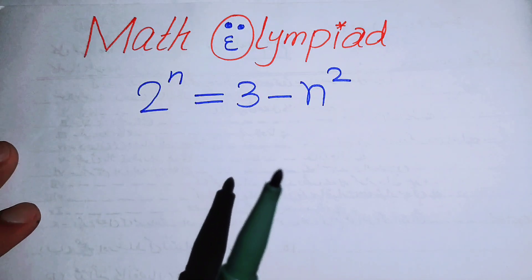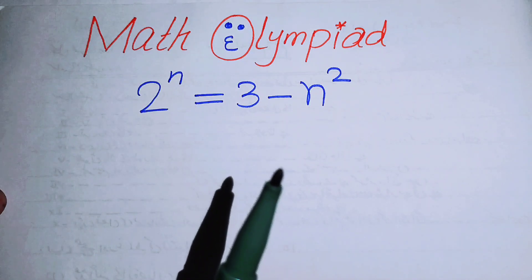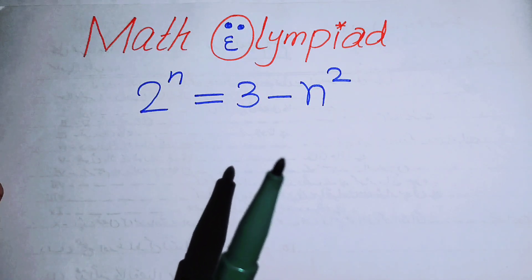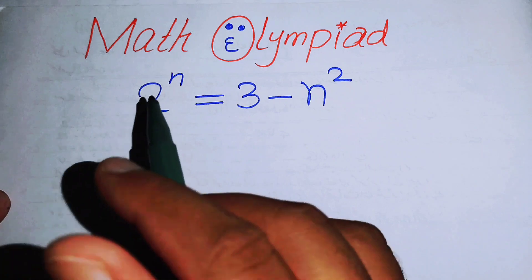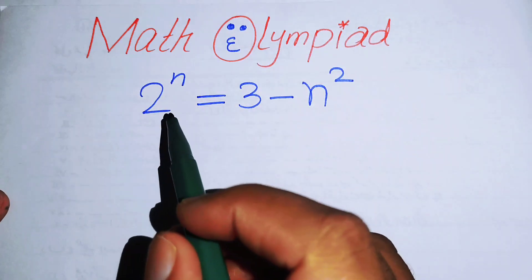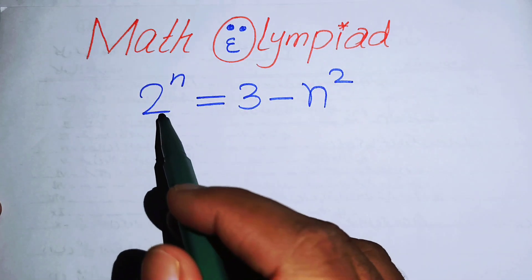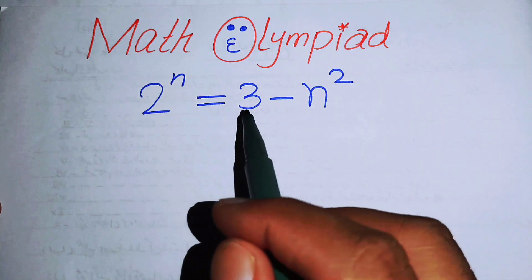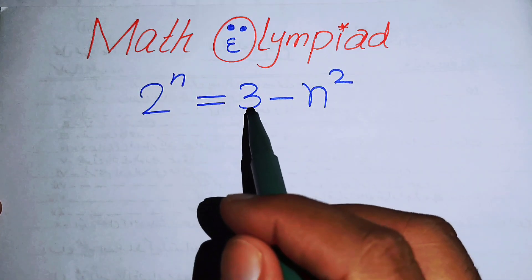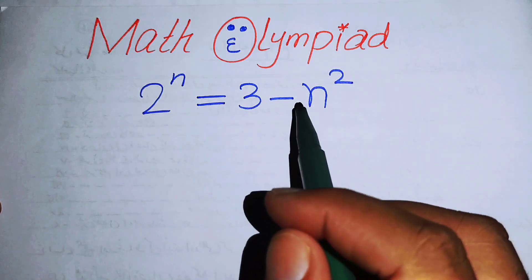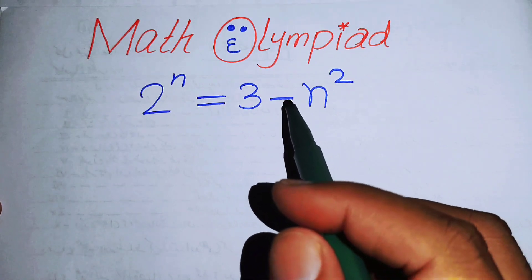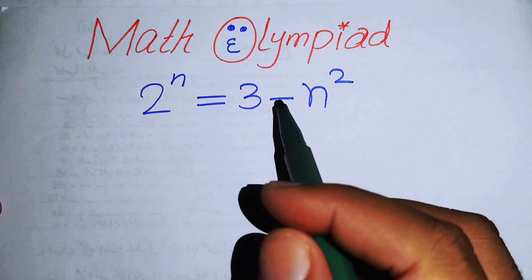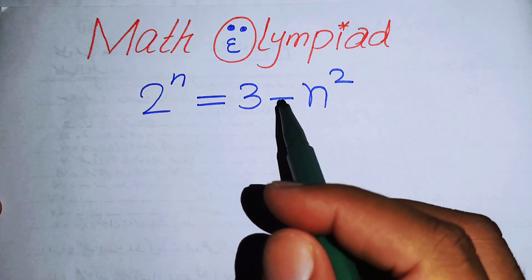Hello everyone, welcome back to the Map of Mathematics. In this video we are going to solve this nice algebra problem: 2 to the power of n equals 3 minus n squared, and we are going to solve for the values of n.